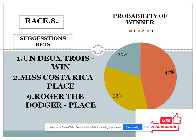Race eight: three choices are given: number one with 47 percent, number two with 33 percent, and number nine with 20 percent. If you see the gap between the top two choices it is 14 percent, but when you see the bottom two choices the gap is 13 percent. In this condition, either you can go with number one for win or number nine for place.